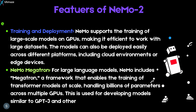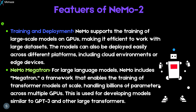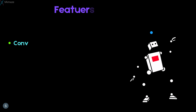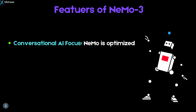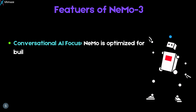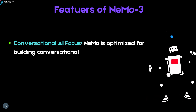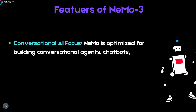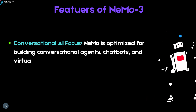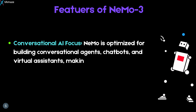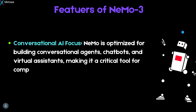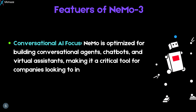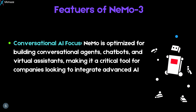Models with trillions of parameters can be trained using Megatron. Nemo is also optimized for building conversational agents, chatbots, and virtual assistants, making it a critical tool for companies looking to integrate advanced AI-driven customer interactions, agent-based systems, and intelligent automation.